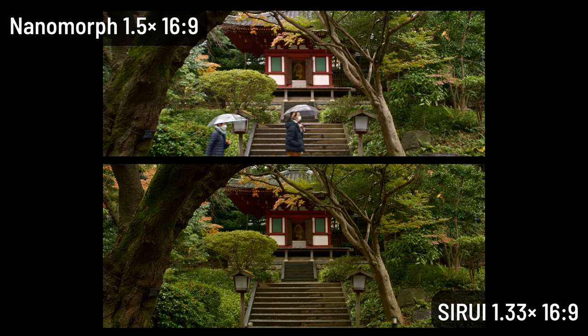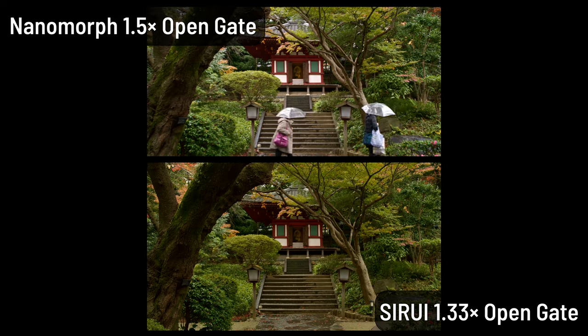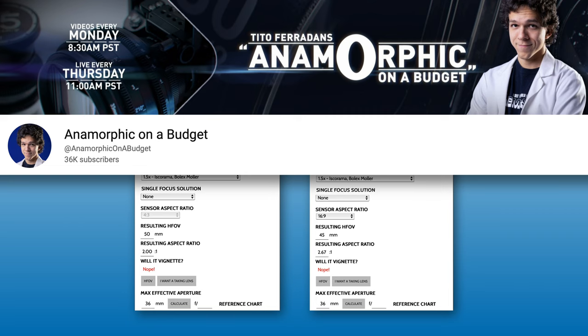The 1.33x squeeze of the Sirui anamorphic lenses compared to the 1.5x squeeze of the Nanomorphs — here's the same shot made with both lenses, both in OpenGate and in 16:9. They aren't the exact same focal lengths to start: the Nanomorph is a 27mm lens and the Sirui is 24mm, but they're close. Calculating the effective focal length of an anamorphic lens gets a bit complicated, but Cito Ferradanz over at the Anamorphic on a Budget channel has a great calculator on his website, which I'll link to down below.